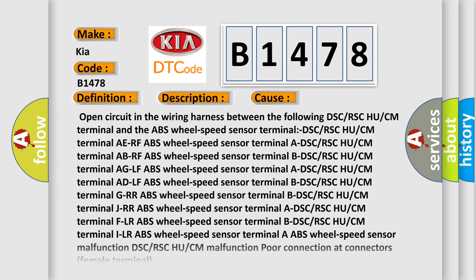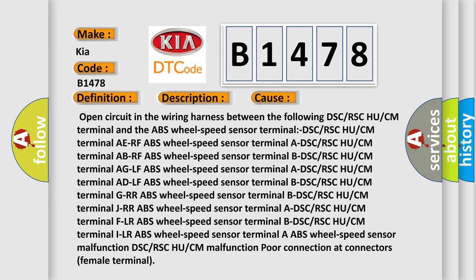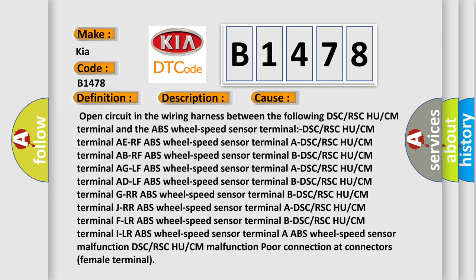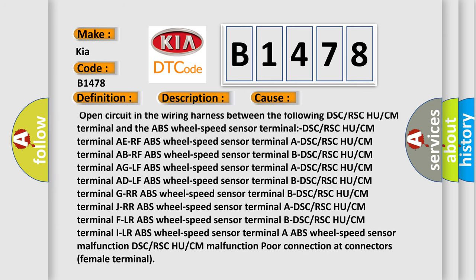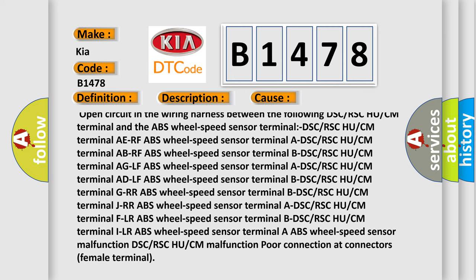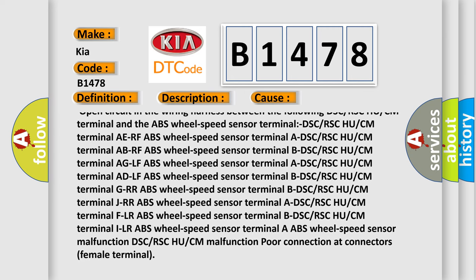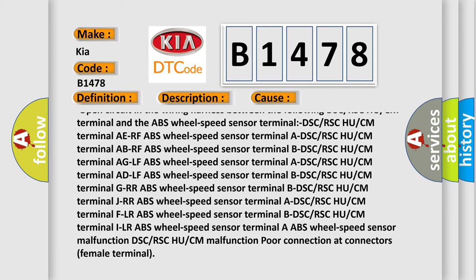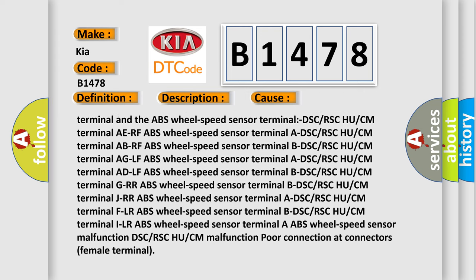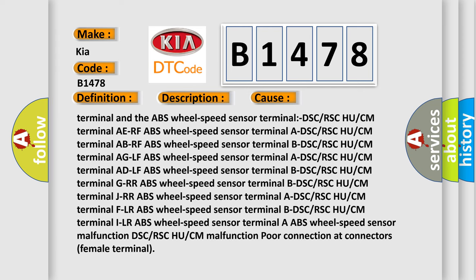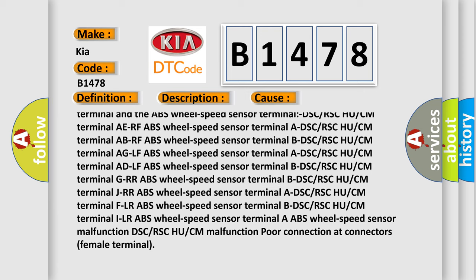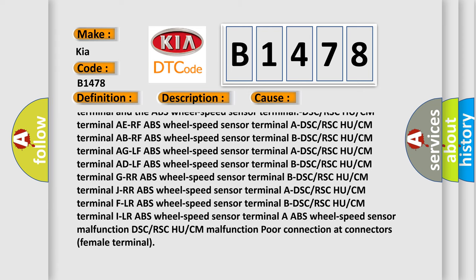This diagnostic error occurs most often in these cases: open circuit in the wiring harness between the DSC or RSC module CM terminal and the ABS wheel speed sensor terminal. This can affect any of the wheel positions — including the DSC or RSC CM terminal and the RR ABS wheel speed sensor terminal.